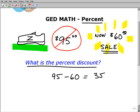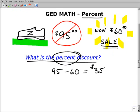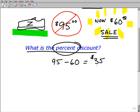So ninety five to sixty was thirty five dollars. So it's thirty five dollars off, essentially. That's one way of looking at it. Well, this is thirty five dollars off. Well, I don't want to know how many dollars off. I want to know what percent off.